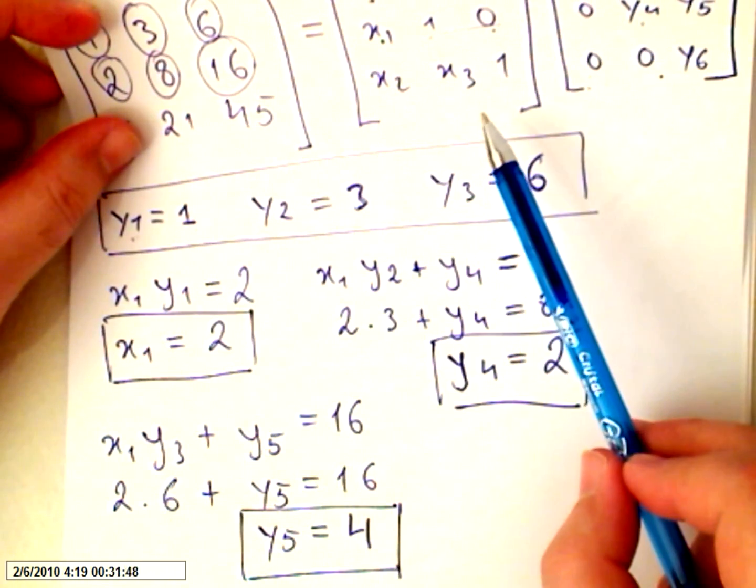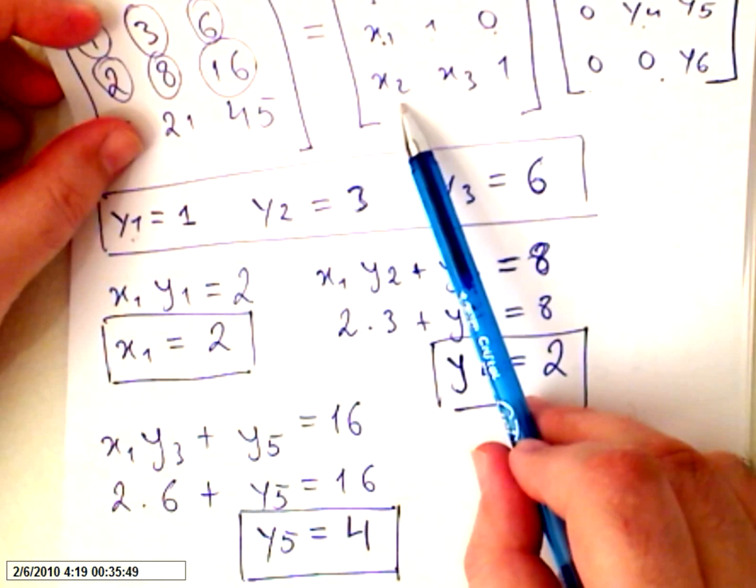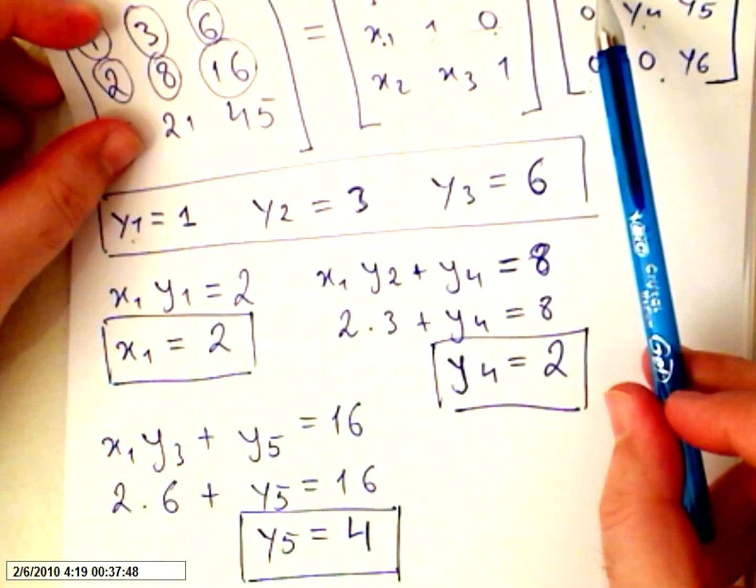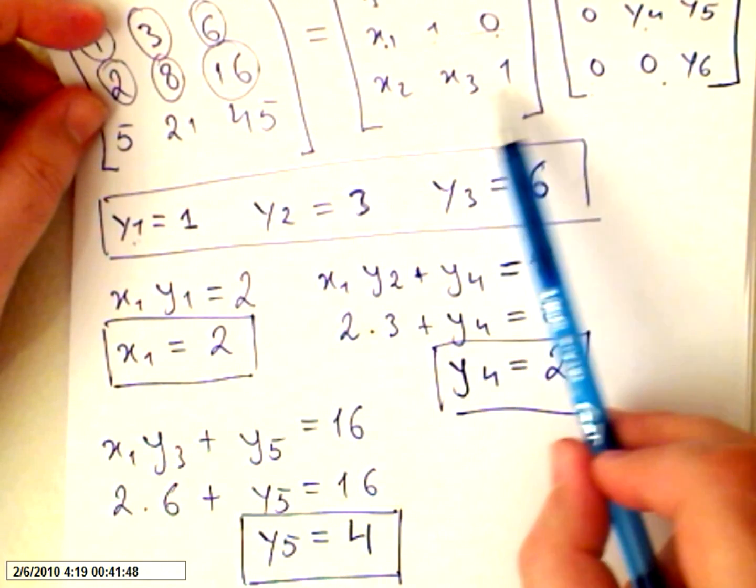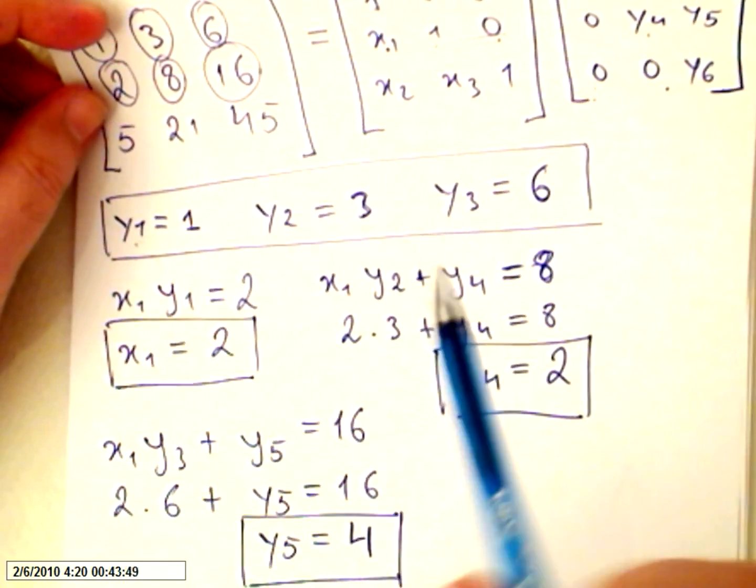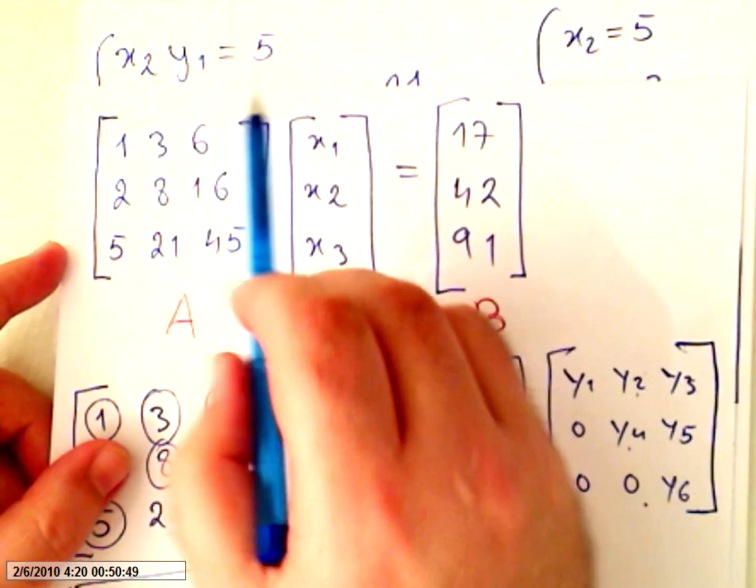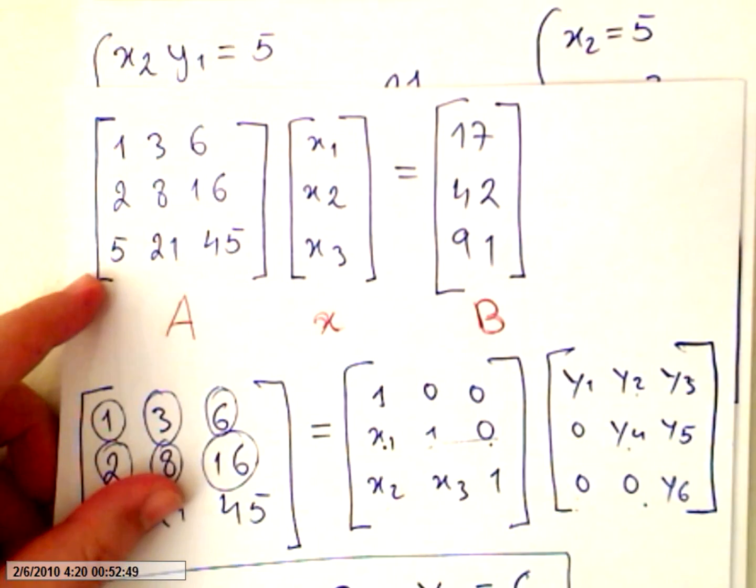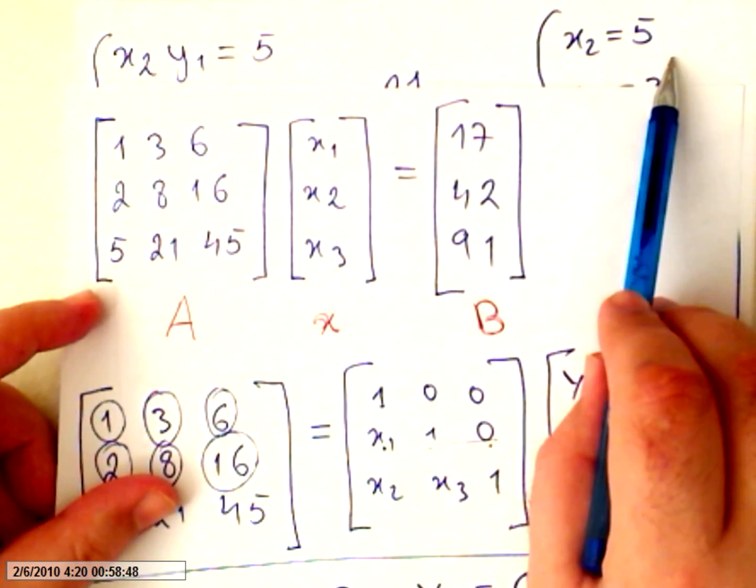Now we're going to move into the last line. So it will be x2 times y1, because this is 0 times this 2. So x2 times y1 will equal 5. But we know that y1 is 1, so x2 is 5. Just back replace the values.